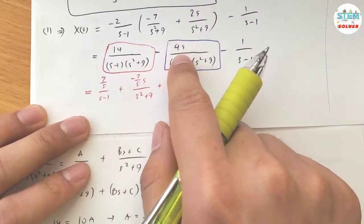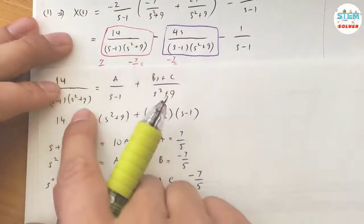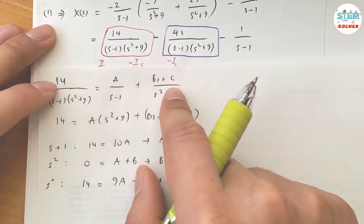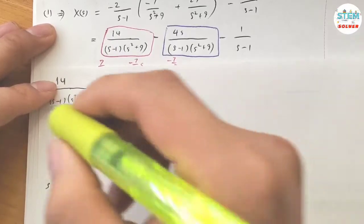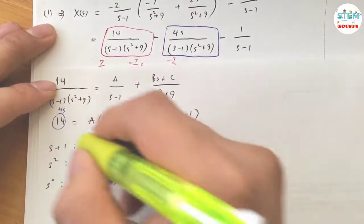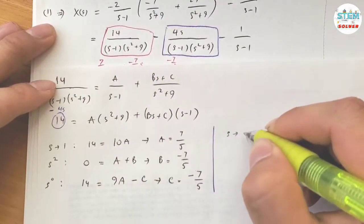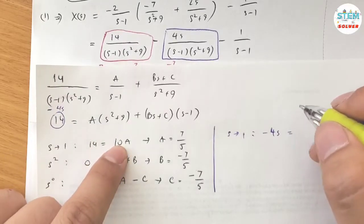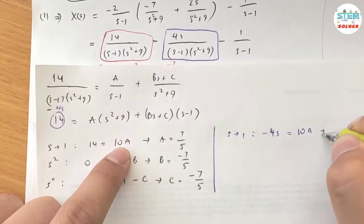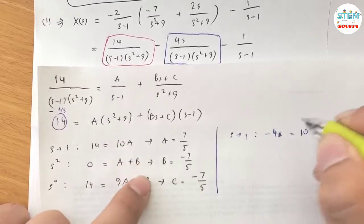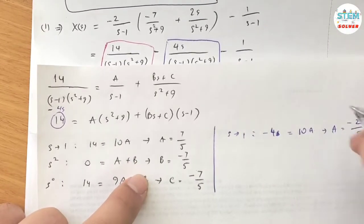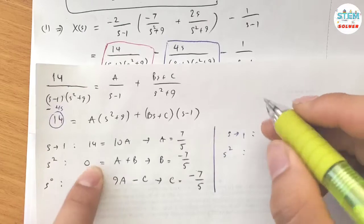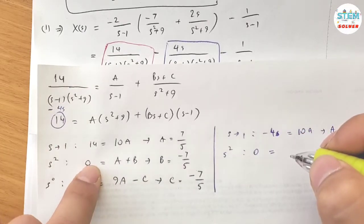This decomposition is similar to the previous one except with different numerators. The second fraction can also be obtained by summation of known terms unless the left side fraction differs. To save time, replace the numerator with negative 4s and proceed with the same structure.